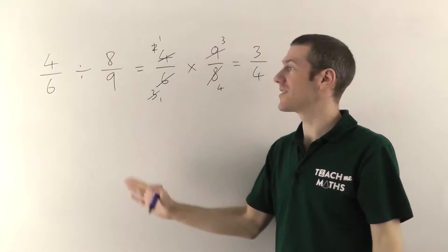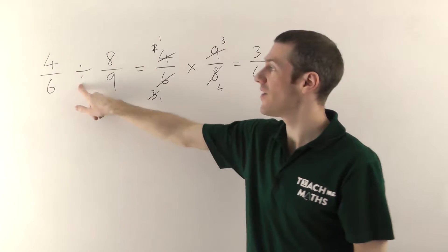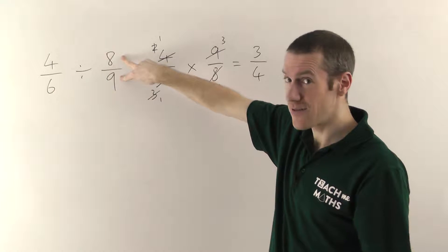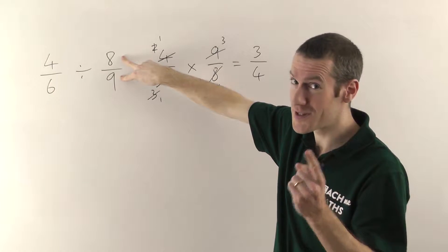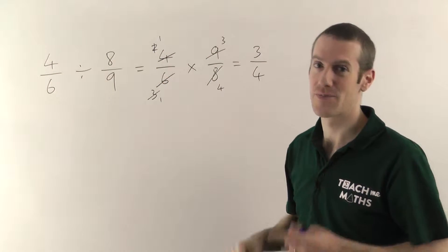So that's essentially the method. Just to reiterate: you change the divide into a times, take the second fraction — must be the second one — and you turn it upside down.